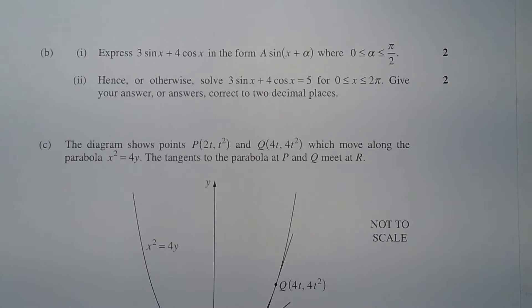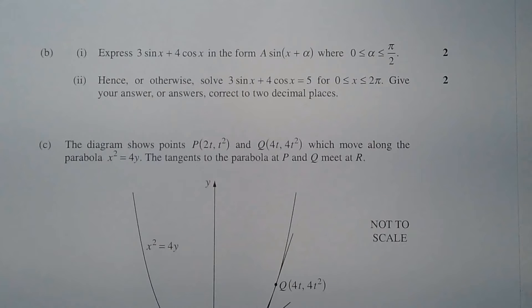Question 2b, Part 1. Express 3 sin x plus 4 cos x in the form A sin(x + α), where α is greater than or equal to 0 and less than or equal to π/2.